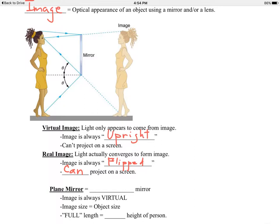Let's talk about this flat mirror in this example with the woman. Whenever you have a flat mirror, the image is always virtual. It's upright, and it's created by light that looks like it's converging. The image size, believe it or not, is the same size as the object. And a full-length mirror is actually only half the size of the object.